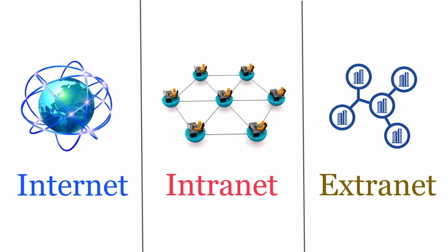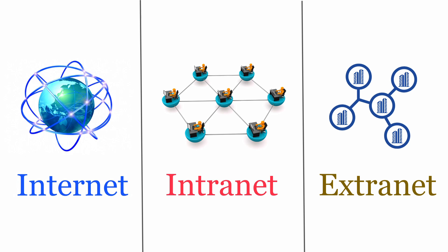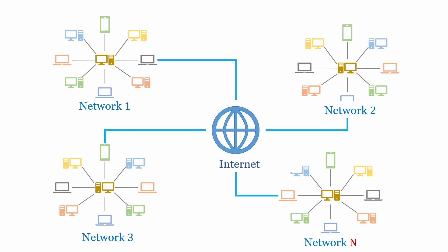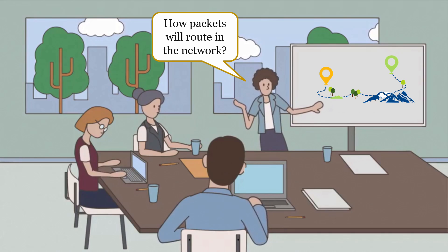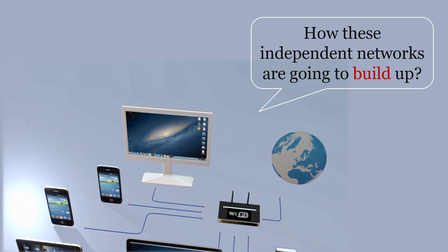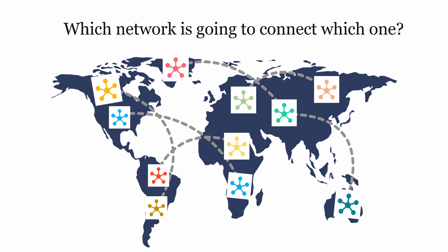Internet, intranet and extranet are different forms of network that were invented to serve different purposes. Both intranet and extranet are kinds of network derived from a global network that we know as internet. Internet is a network of networks that is made up of a large number of independent networks. This network is fully distributed and there is no central controlling unit that decides how packets will route in the network, how these independent networks are going to build up, or which network is going to connect which one.